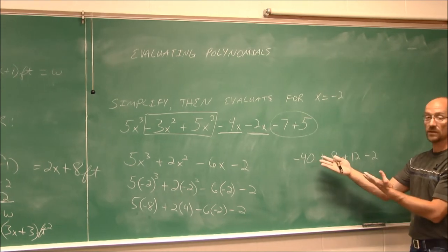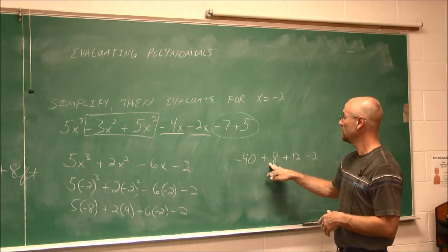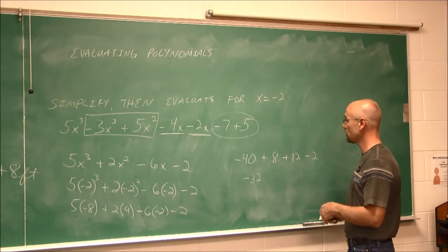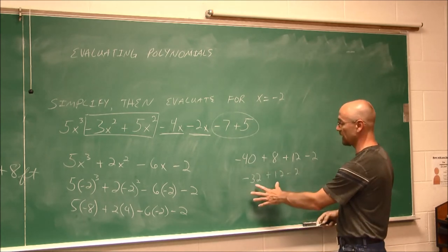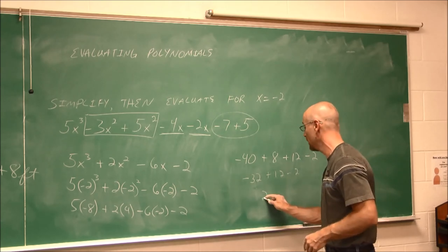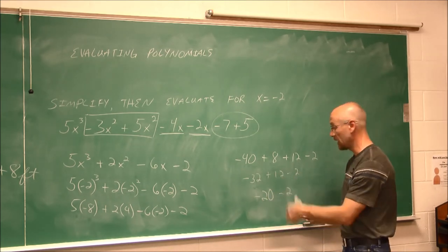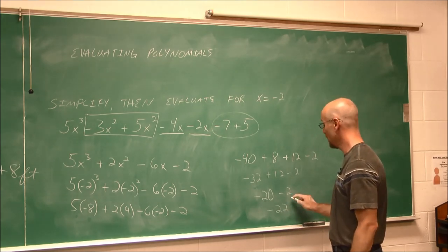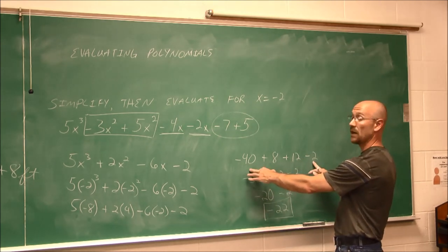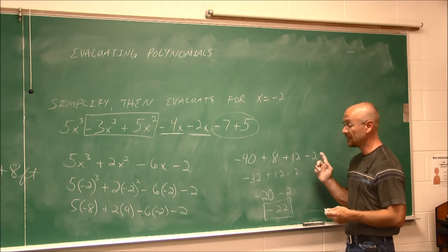Now I add from left to right as order of operations tells us. Negative 40 and 8: different signs, difference is 32, and the larger value is negative — so negative 32. Then negative 32 and 12: different signs, difference of 32 and 12 is 20, and the larger value is still negative — negative 20. Then both negative 20 and negative 2 are negative, same sign, combined gives negative 22. There's another way using the associative property — combine all negatives, combine all positives, then find their difference. Whatever way you approach it, be consistent and keep practicing.